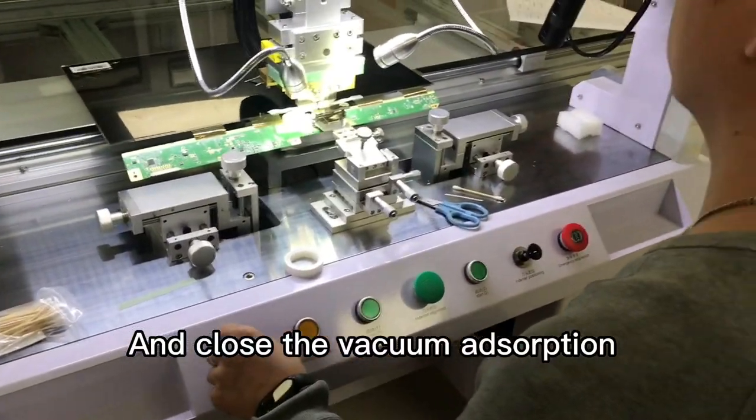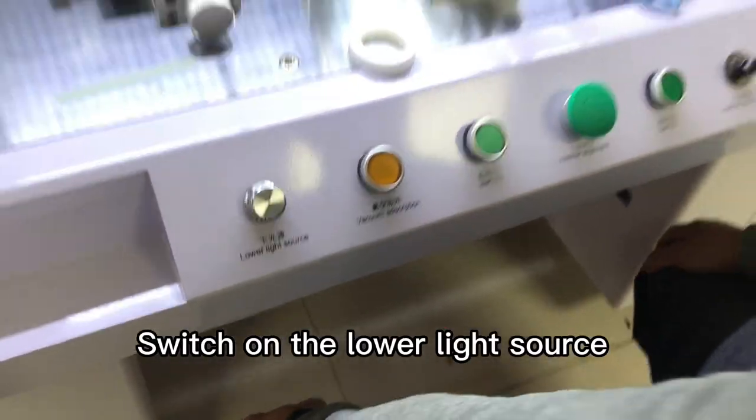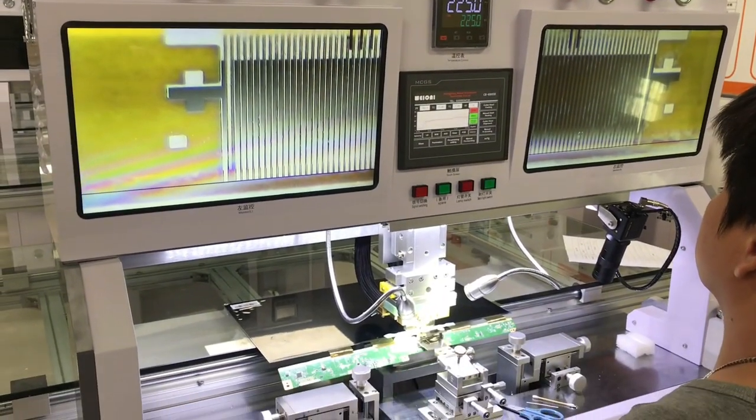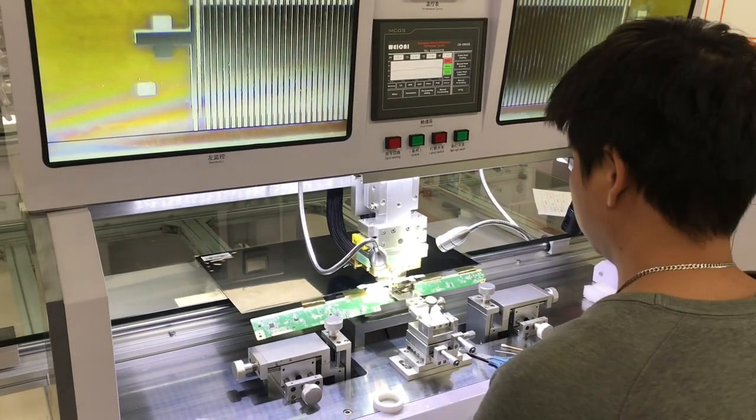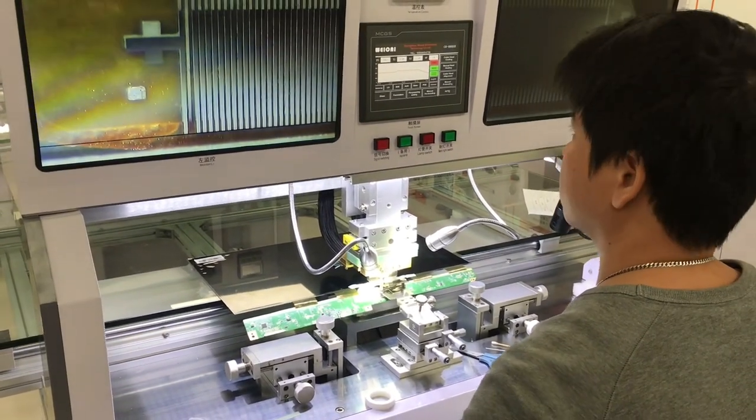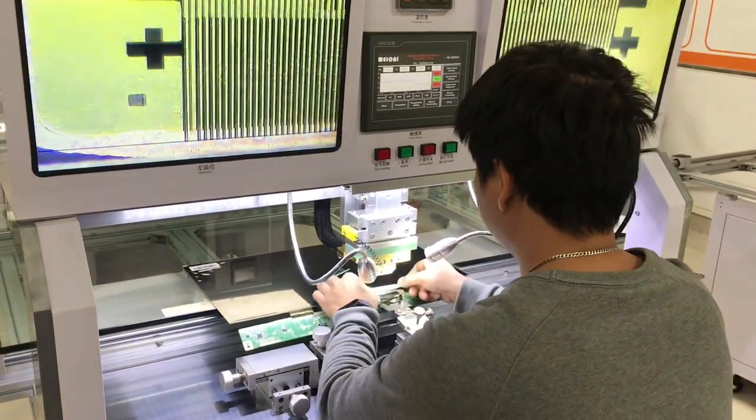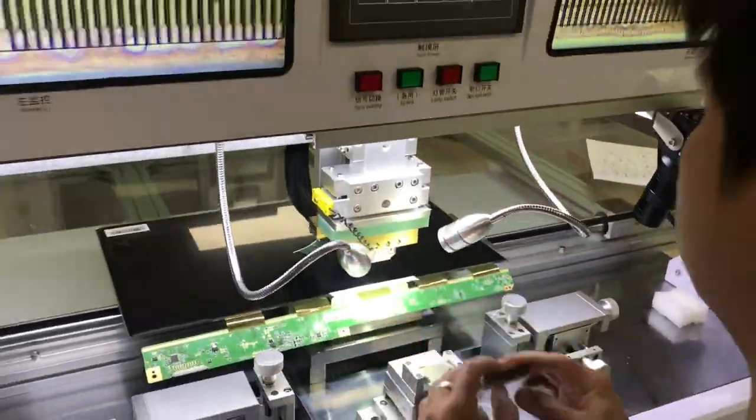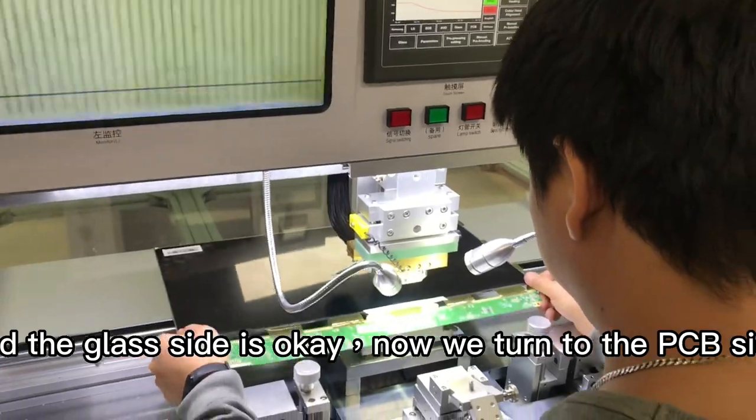Close the vacuum of suction. Turn on the lower line source. Put the platform. The glass side is okay. Return to the PCB side.